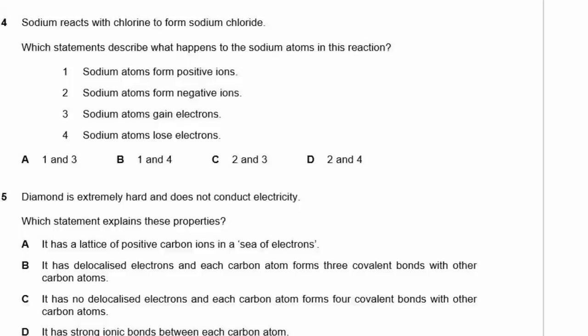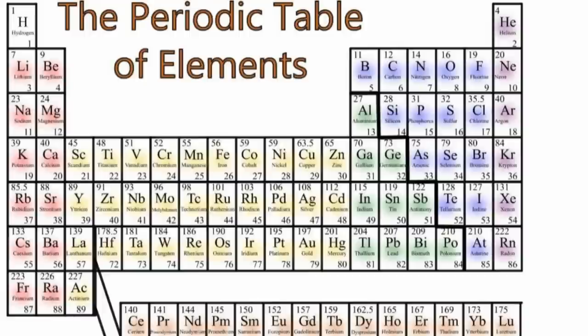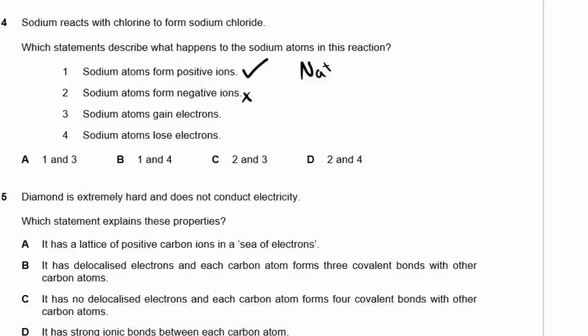Question 4. Sodium reacts with chlorine to form sodium chloride. Which statement describes what happens to the sodium atoms in this reaction? Sodium becomes Na+. Sodium is on the left side of the periodic table, so in order to get a full valence shell, it has to lose one electron, making it positive. So sodium forms positive ions, not negative ions, and it loses electrons to become an ion. So statements 1 and 4 are correct, and the answer is B.